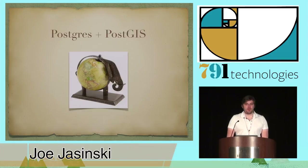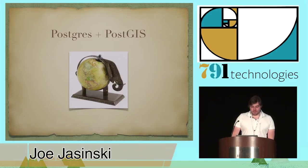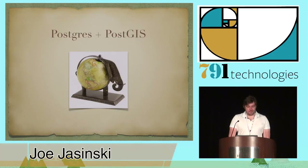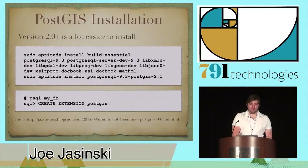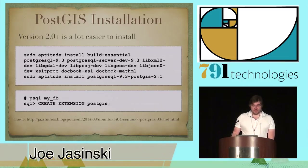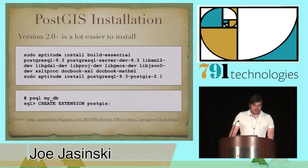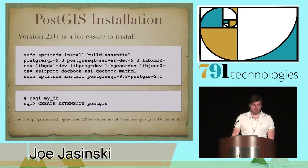I'd like to talk about Postgres and PostGIS. When I use GeoDjango, my preferred backend is PostGIS and Postgres. I love Postgres, and GeoDjango typically has better support and more functions available for Postgres, so it's a good choice for working with geodata. PostGIS went through a major update to version 2.0 not too long ago, and it's become a lot easier to install. For an Ubuntu 14.04 system, you just need to install a few dependencies, switch to the database you want to use, and run a create extension command. There's also a link in the slides for quick installation steps for Ubuntu 14.04 and CentOS 7.